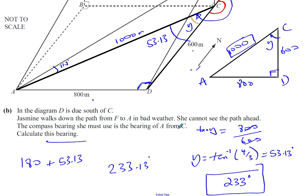So I'm going to write my answer as 233 degrees. That is a bearing of A from C. And there we have the answer to our question.